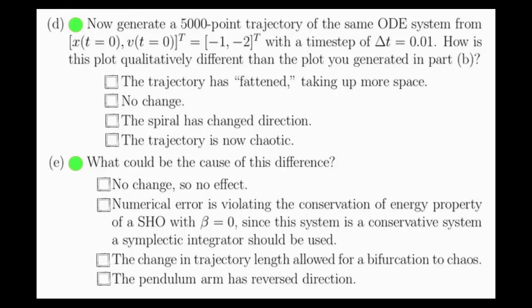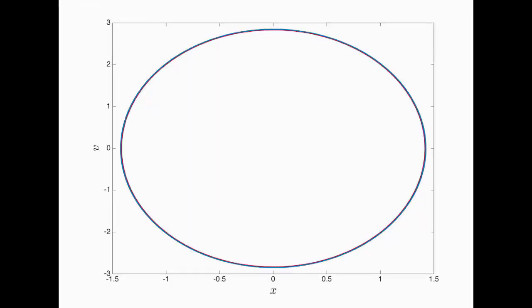For parts D and E, we need to generate a 5,000 point trajectory of the same ODE system and the same initial conditions, using a time step of 0.01, as we did in part B. And we want to see if there's a difference qualitatively between this plot and the plot using 500 points. Describe that difference if there is one. And if there was a difference, we need to try to diagnose that difference. In this plot, I have plotted both the 500 point trajectory in red and the 5,000 point trajectory in blue. As you can see, the trajectory has slightly fattened. That is, the trajectory has gotten a little bit wider and takes up a little bit more of phase space.